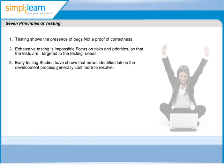The third principle states that errors identified late in the development process generally cost more to resolve. Hence, testing activities should start as early as possible in the SDLC and focus on defined objectives.